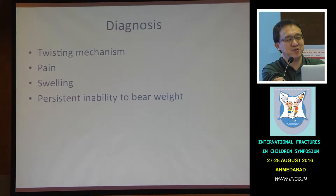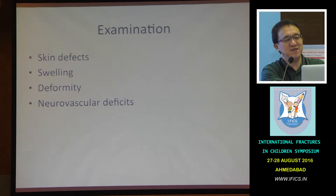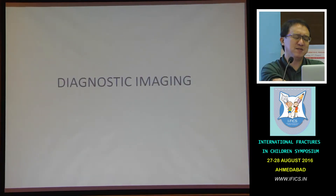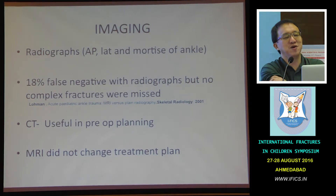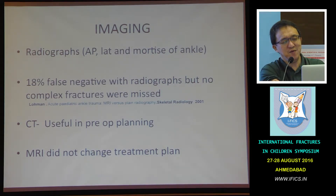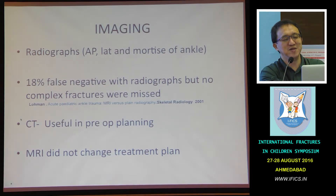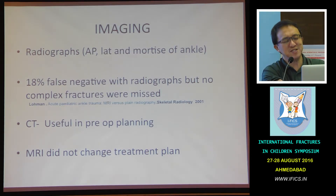Diagnosis: typically patients come in with a twisting mechanism, pain, swelling, and can't weight bear. You may even get skin problems and should look at the nerve as well. Almost always you do a nice X-ray including a Mortise view. You may get about 18% false negatives, but by and large no complex fracture will be missed. However, almost all cases where you are thinking of surgical intervention and have any doubt, CT scan is indicated. MRI doesn't change the treatment plan much, but CT is certainly very useful.